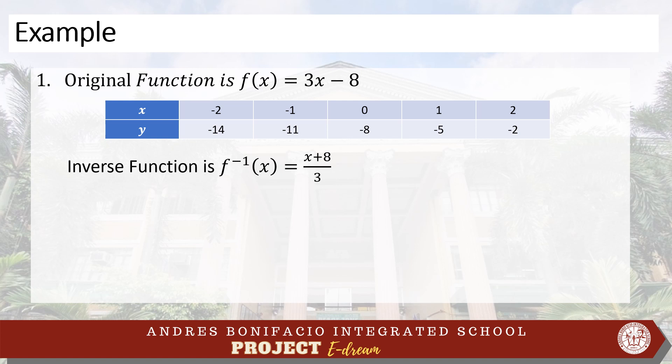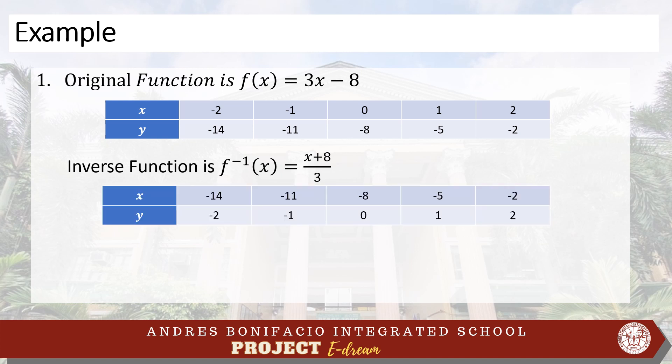Again, using a table of values, we will show the inverse of that function. The given domain of the inverse function is: negative 14, negative 11, negative 8, negative 5, and negative 2. And our range of the inverse function is: negative 2, negative 1, 0, 1, and 2. From the given table of values, we can see that the domain of the original function is the range of the inverse function, and the range of the original function is the domain of the inverse function.